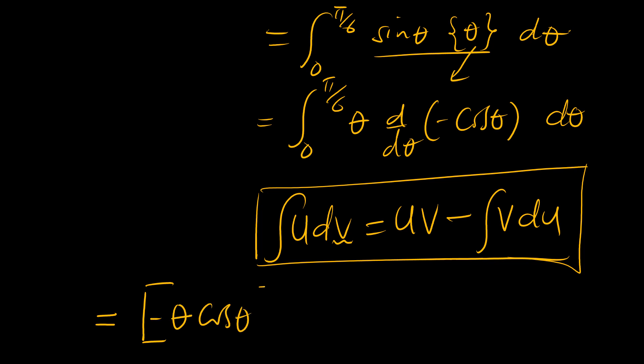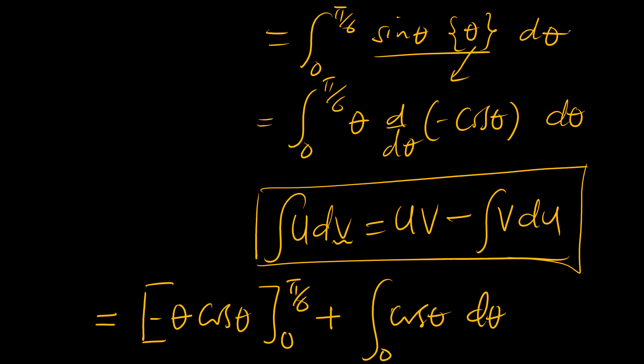So we have initially the product of theta and negative cosine theta, then minus a minus — which becomes plus — the derivative of theta, which is 1, times cosine theta. With our limits from 0 to pi over 6, plus the integral of cosine theta from 0 to pi over 6.